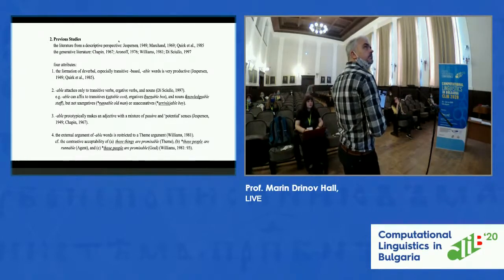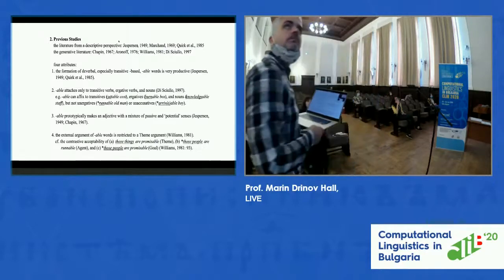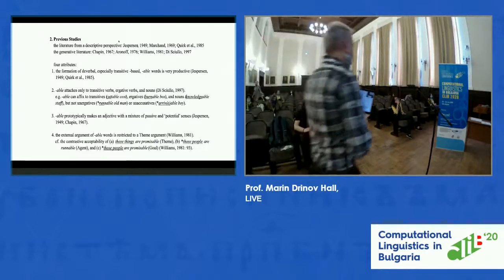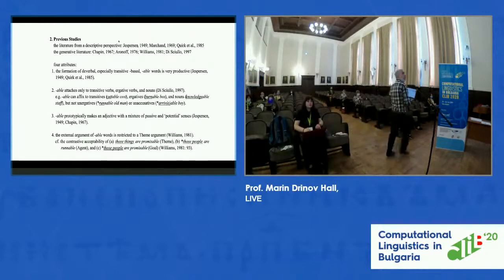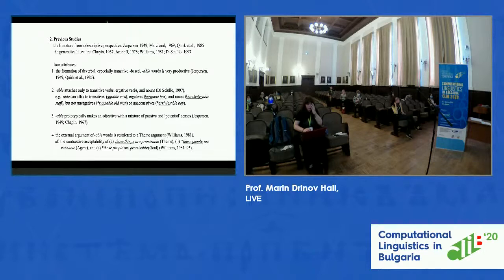One: the formation of verbal, especially transitive-based -able words, is very productive. Two: -able attaches only to transitive verbs, cognitive verbs, and -able bases. Three: -able phonologically makes an adjective with a mixture of passive and potential senses.